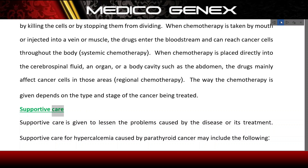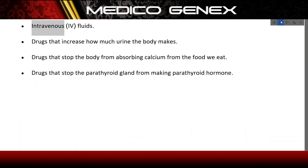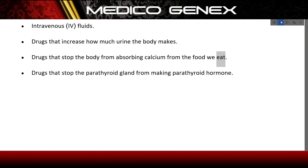Supportive care is given to lessen the problems caused by the disease or its treatment. Supportive care for hypercalcemia caused by parathyroid cancer may include: intravenous fluids; drugs that increase how much urine the body makes; drugs that stop the body from absorbing calcium from food; and drugs that stop the parathyroid gland from making parathyroid hormone.